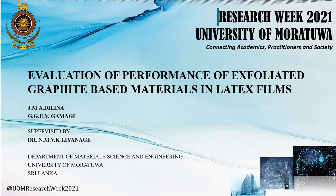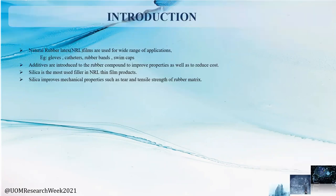To give a brief introduction on the topic: natural rubber is a widely used material in industrial applications, and especially when it comes to natural rubber latex films, it has a wide range of applications such as glove manufacturing, catheters, rubber bands, swim caps, and more. In order to improve properties of the rubber compound, additives are introduced into it, which also results in a reduction of cost.